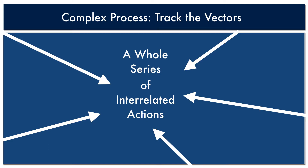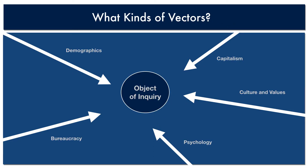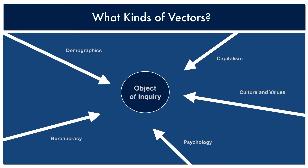I like to think of this explanation as a collection of vectors which operate separately but also interdependently. To explain and analyze most social phenomena, including urban planning, we often look to a set of big variables like demographics, capitalism, culture and values, psychology, and bureaucracy. We could add other ideas, but let's just stick with these for now.